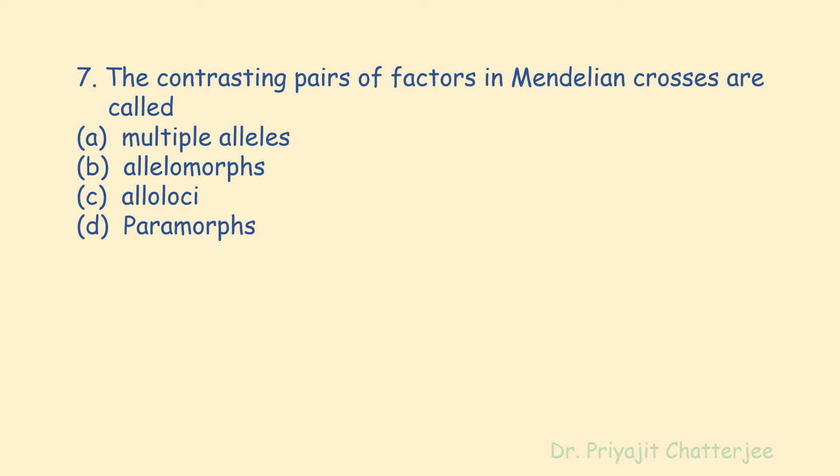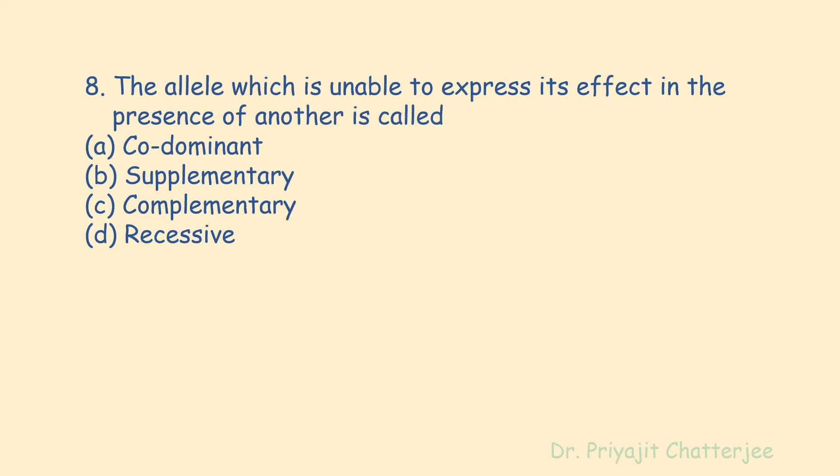The next question: the contrasting pairs of factors in Mendelian crosses are called — options are multiple alleles, allelomorphs, alleloci, or paramorphs. The correct answer is allelomorphs. The contrasting pairs of factors in Mendelian crosses are called alleles or allelomorphs. Alleles are different forms of a gene present at the same locus on a homologous pair of chromosomes.